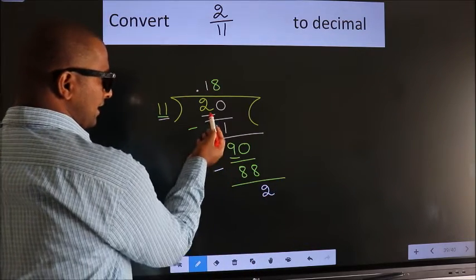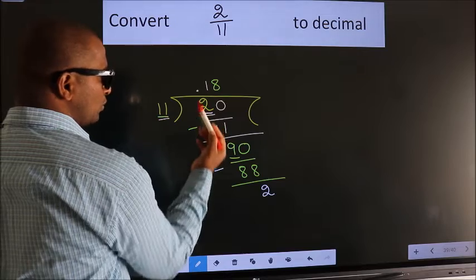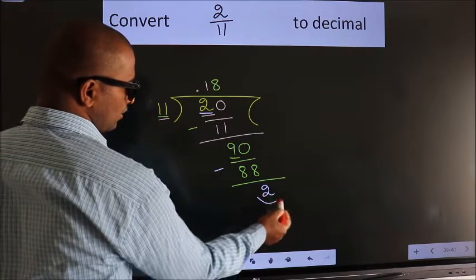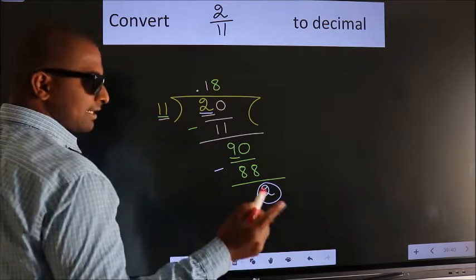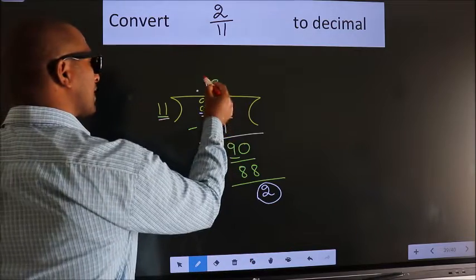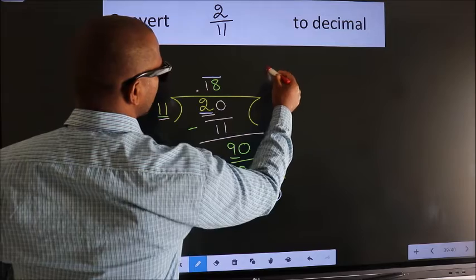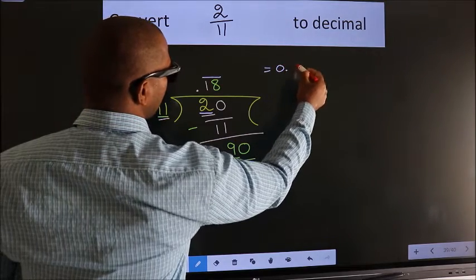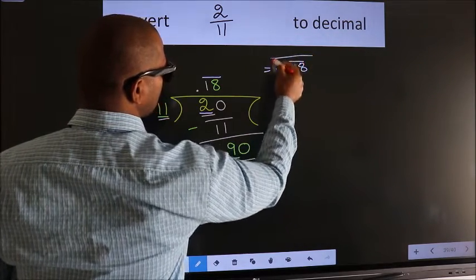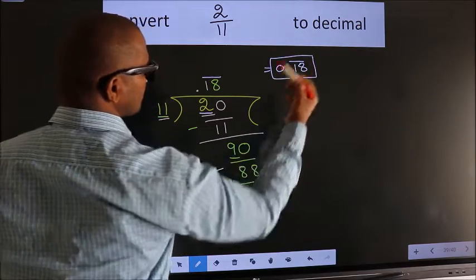At the start we had 2, we got 2 again, that means we get bar on this number. Therefore our answer is 0.18 bar on these two numbers is our answer.